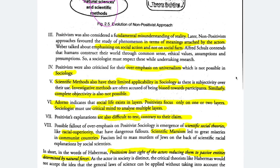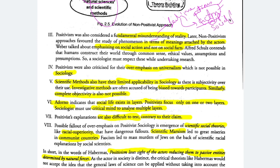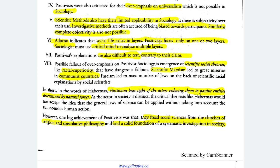Positivism was a fundamental misunderstanding of reality because in reality you have feelings, meanings, and actions — which actors have given to their actions — and those feelings, meanings, and motives you have to understand. Positivists said treat and study social facts — what Durkheim emphasized. But Weber emphasized social action rather than social facts, and positivists were also criticized for overemphasis on universalism, which is not possible in sociology. Scientific methods have limited applicability in sociology because subjectivity exists. In investigative methods like surveys and questionnaires, there is bias towards participants. The type of questions you choose, your choice of topic — subjectivity comes from there. Social life exists in layers and positivism only scratches the surface; it does not do in-depth analysis.